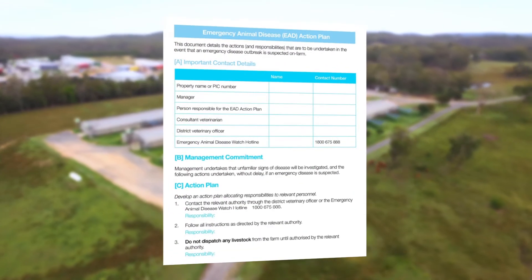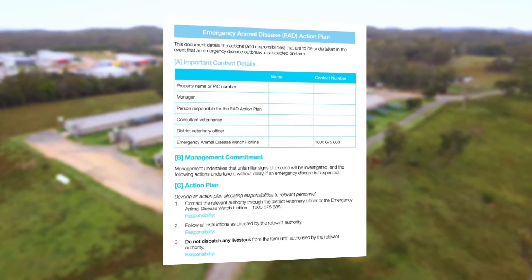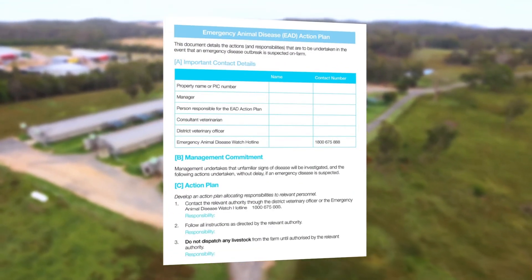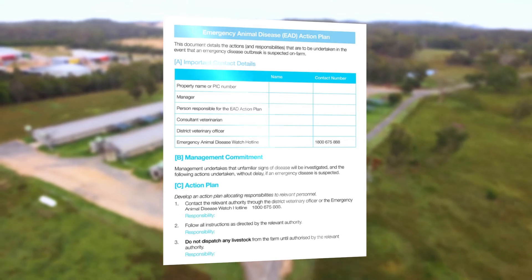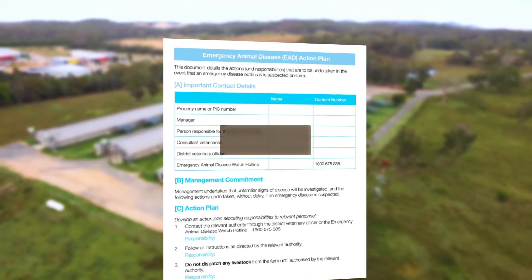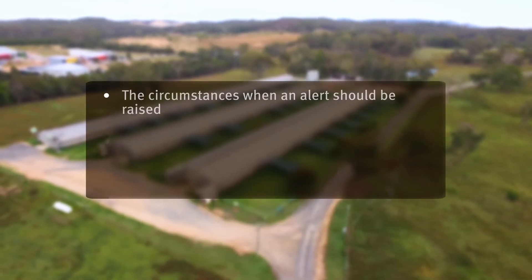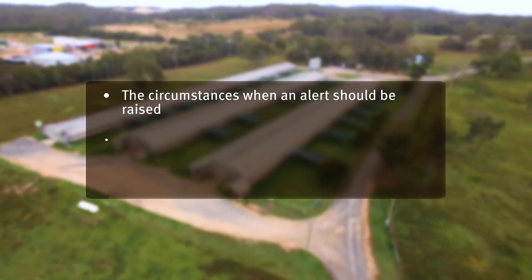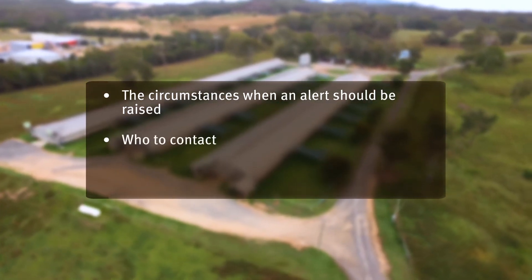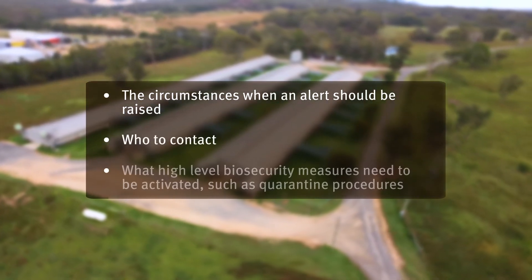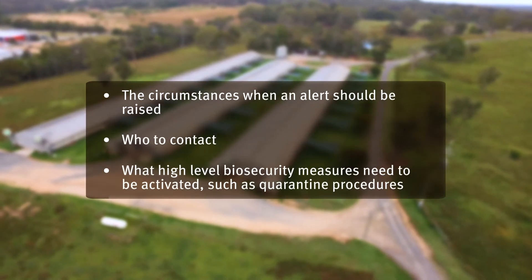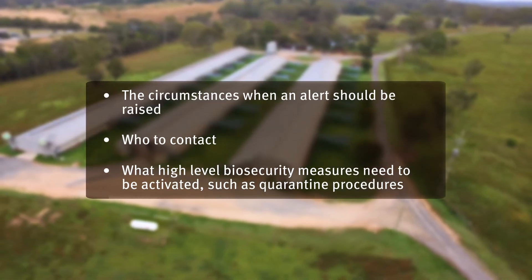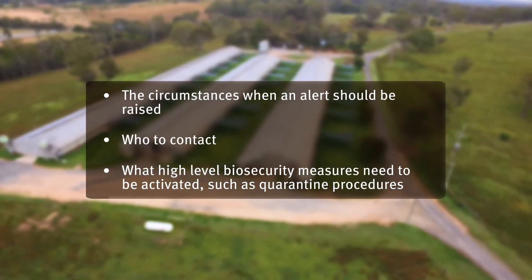An action plan for dealing with a suspected emergency animal disease outbreak must be available on farm. This should include the circumstances when an alert should be raised, who to contact, and what high-level biosecurity measures need to be activated, such as quarantine procedures.